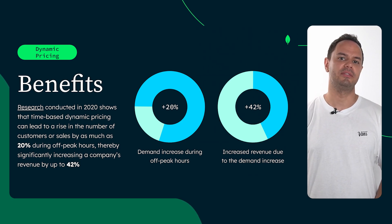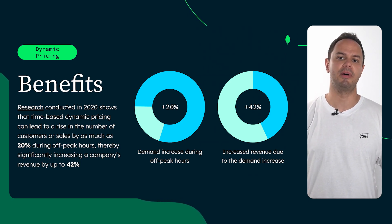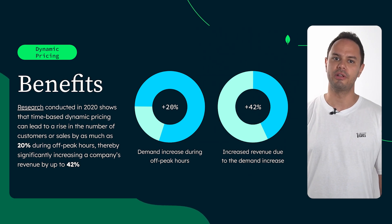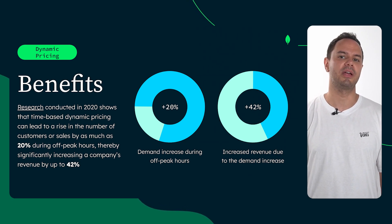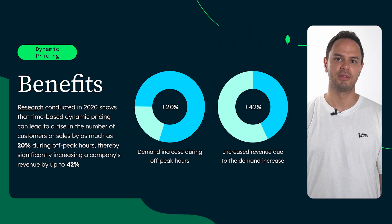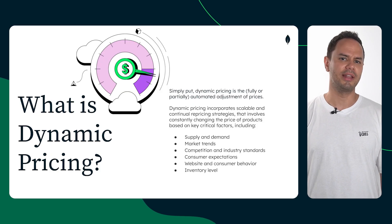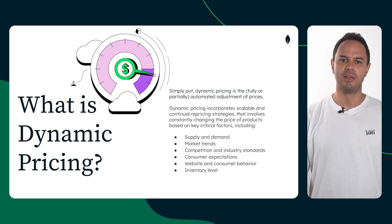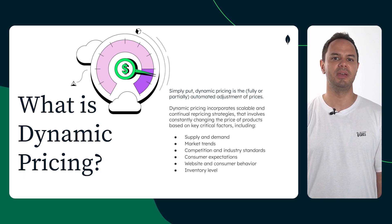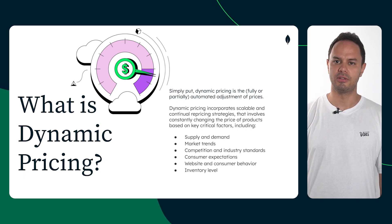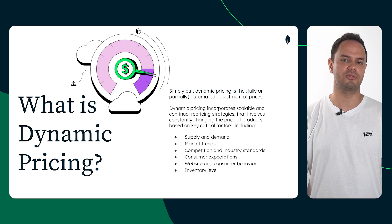Research has shown that time-based dynamic pricing can increase demand by up to 20 percent during off-peak hours and boost company revenue by an impressive 42 percent. So what exactly is dynamic pricing? It's the art and science of adjusting prices in real time to optimize revenue based on different variables, such as customer behavior, inventory levels, and market trends.